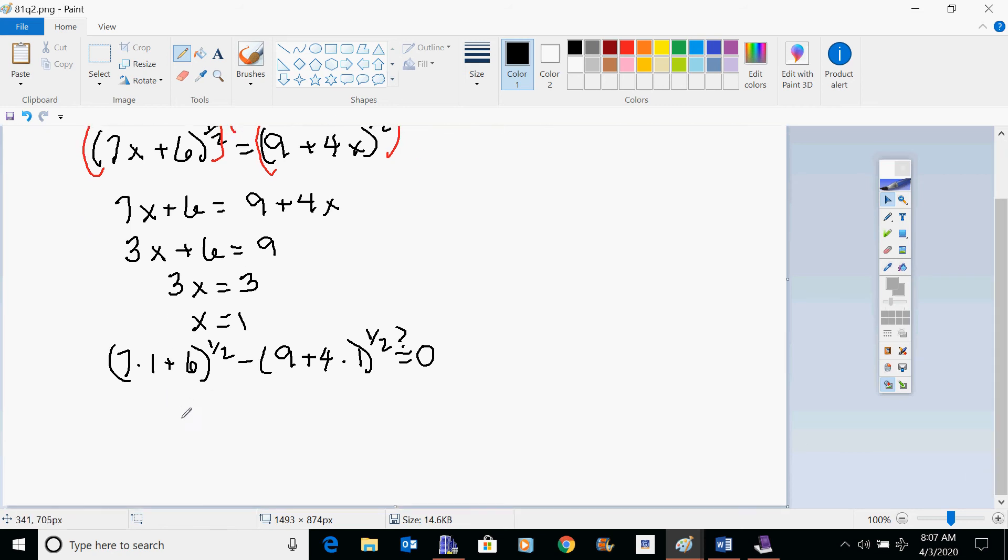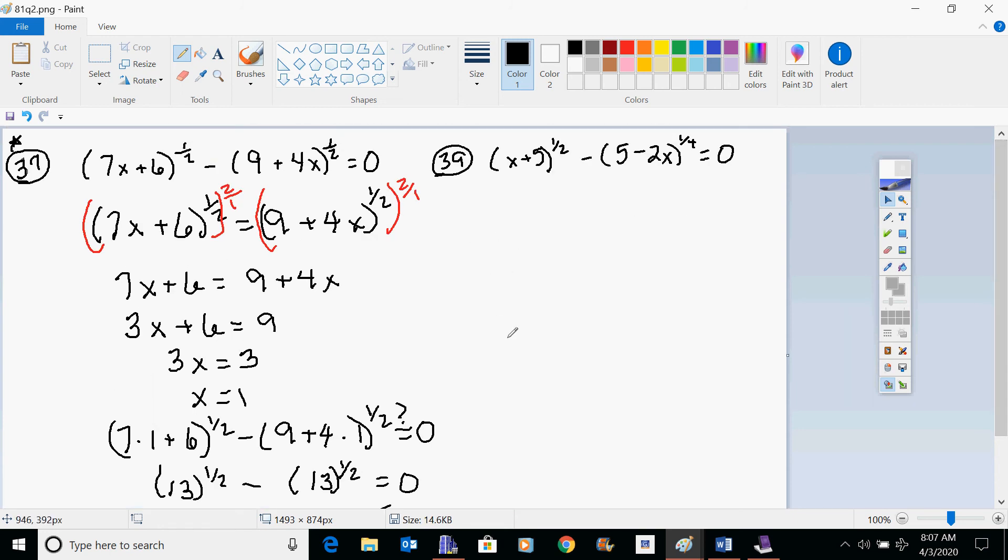And as we go through and we do that, this would be 13 to the 1 half power. But guess what? This is also 13 to the 1 half power. So I really don't even care how much 13 to the 1 half power is because when I subtract a number from itself, I get 0. And so it checks out, even though that 13 might have made you go, ah, I don't want that to be 13. All right, moving right along, let's do the same basic strategy for this one.